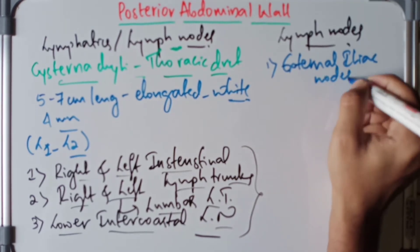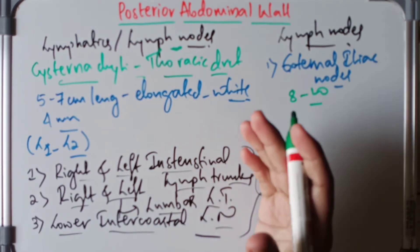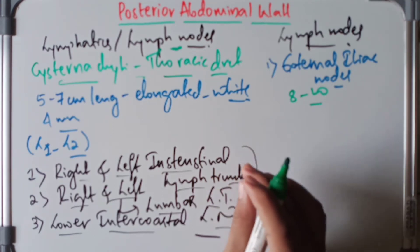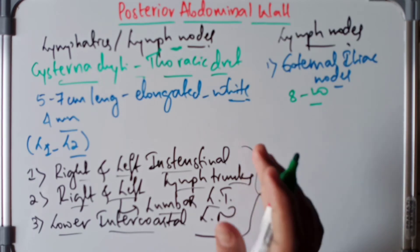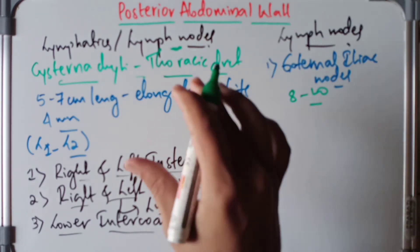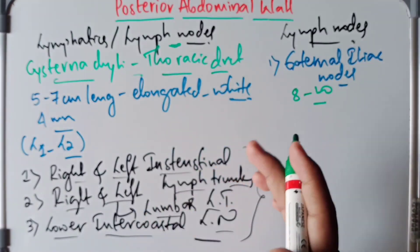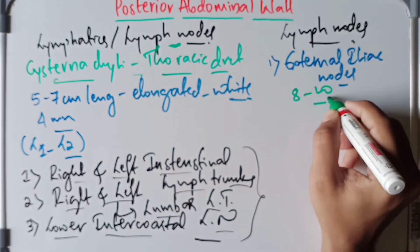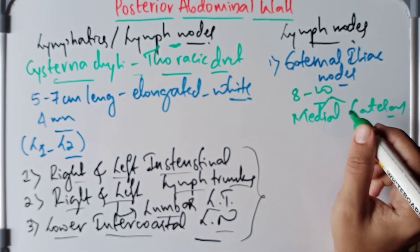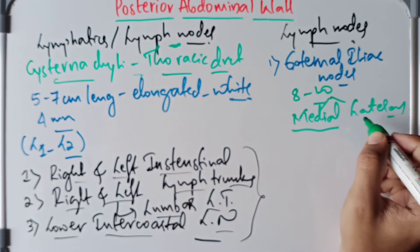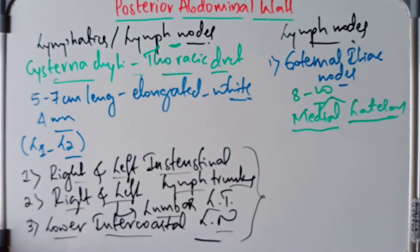The external iliac nodes are around 8 to 10 in number and lie along the external iliac vessels. The medial nodes receive lymph from the pelvic viscera and the lower limb, whereas the lateral nodes receive lymph from the territories of the inferior epigastric and deep circumflex iliac vessels. Efferents from these nodes pass into the common iliac nodes.